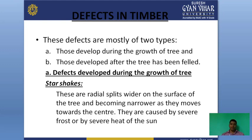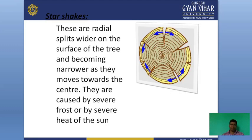Star shakes are found during the growth of the tree, caused by heat of the sun or frost. This is an example of star shakes — radial splits wider on the surface becoming narrow toward the center, caused by severe frost or heat of the sun.